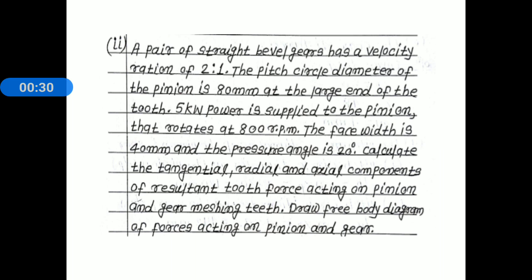Let me clearly read the problem statement. A pair of straight bevel gears has a velocity ratio of 2 is to 1. The pitch circle diameter of the pinion is 80 millimeters at the large end of the tooth. 5 kilowatt power is supplied to the pinion that rotates at 800 rpm. The face width is 40 millimeters and the pressure angle is 20 degrees. Calculate the tangential, radial, and axial components of the resultant tooth force acting on the pinion and gear. Also draw the free body diagram of forces acting on the pinion and gear.